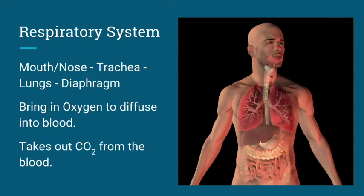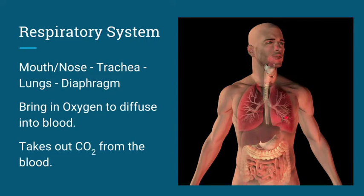The respiratory system is mostly made of the mouth and nose, the trachea — which is the tube that goes down here — your lungs, and a broad muscle called the diaphragm. That diaphragm does the pulling on your lungs, and the purpose of your respiratory system is to bring in oxygen into your lungs so that oxygen can diffuse into your blood, and then it also pushes out the carbon dioxide which has dissolved back into your lungs from your blood.